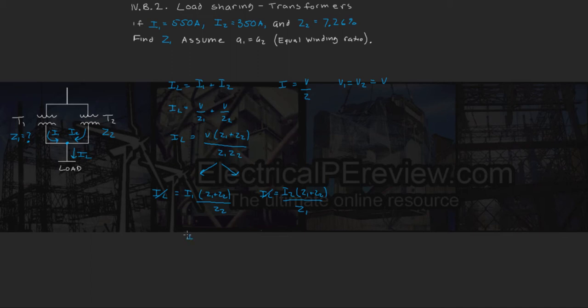Now, so we set these two equal to each other, and we have I1, Z1 plus Z2 over Z2 equals I2 times Z1 plus Z2 over Z1.